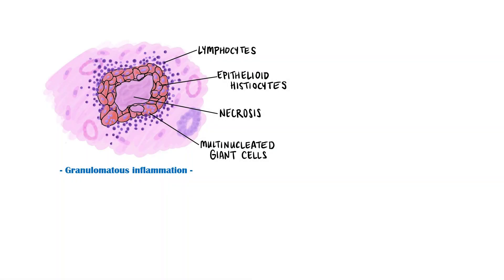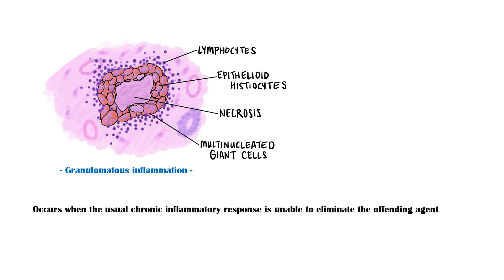Granulomatous inflammation is a specialized type of inflammation, which occurs when the usual chronic inflammatory response is unable to eliminate the offending agent. A typical example is tuberculosis.